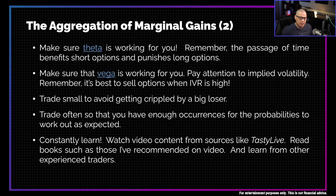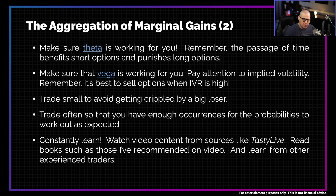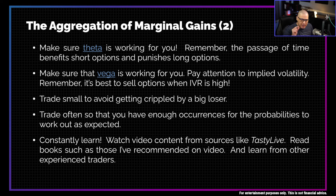We talked about trading small — let's also talk about trading often, because that's another area that can improve your trading performance. You need to trade often so that you have enough occurrences for the probabilities to work out as expected. I've done a video called the Law of Large Numbers — go watch that video. Once you understand that concept, you'll understand why you need to trade often. Find a strategy you think you have some kind of edge at, then exploit it by trading it as much as you can — hundreds, if not thousands of those trades. Trade small and also trade often.